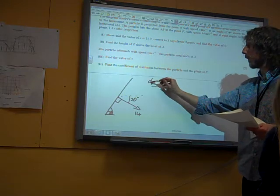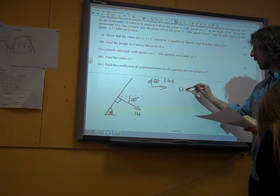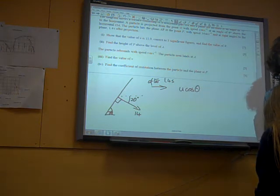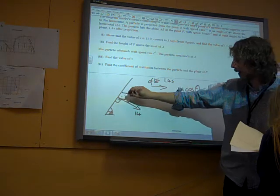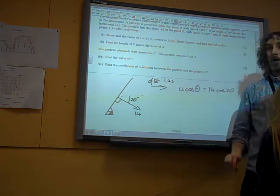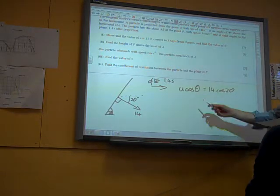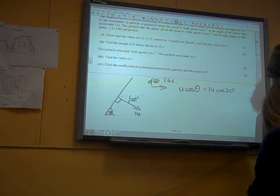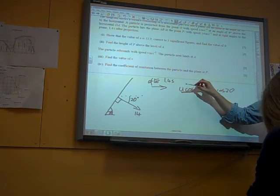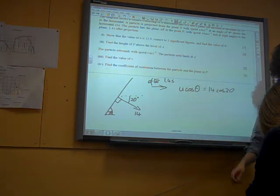If I think horizontally, after 1.4 seconds I've got that u cos theta is the same as 14 cos 20, because that's the horizontal component of my velocity. I'm starting to get some things together. I've now got what u cos theta is. I want to find the vertical component as well, then I can find my initial velocity.